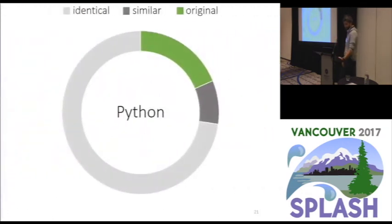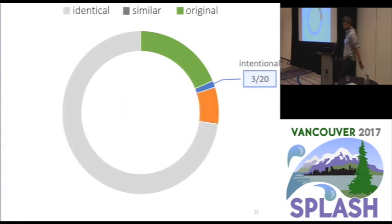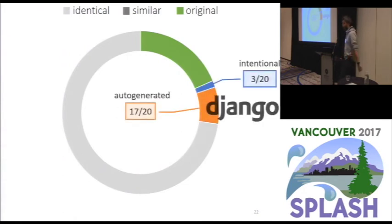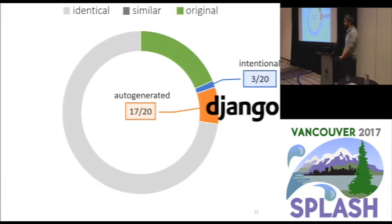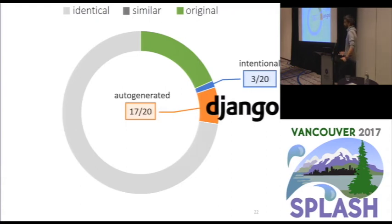In Python, the picture is roughly similar, but Python was truly dominated by Django. Out of 20 samples, 17 were auto-generated, all belonging to Django. Of the remaining intentional ones, two were unit tests and one was a Django database SQL schema.